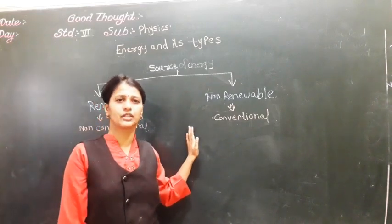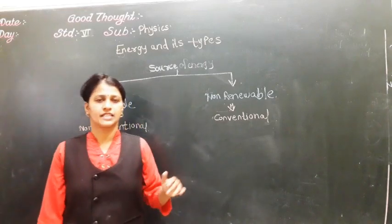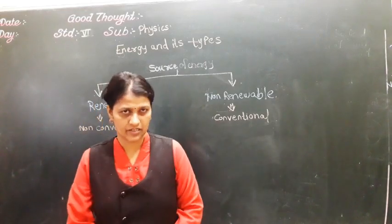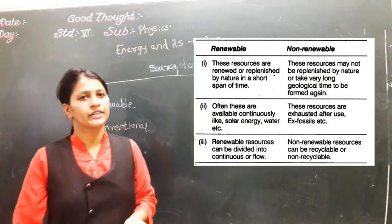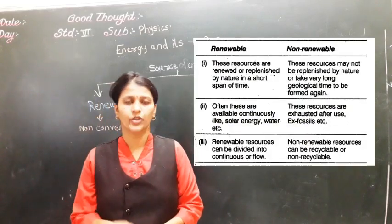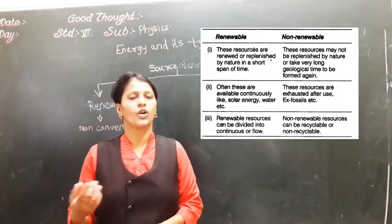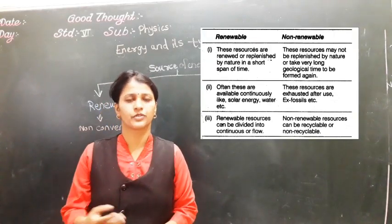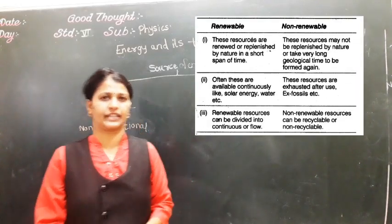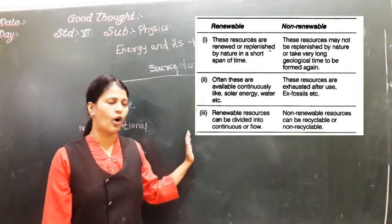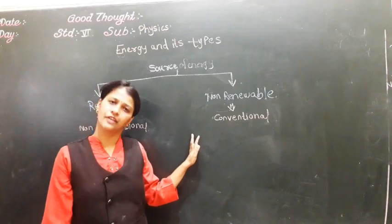So you have to use non-renewable sources very properly. For example, for a small distance if you want to go, you can use your bicycle or go by walking — there is no need to always use a vehicle. We can conserve them and take good care of non-renewable sources of energy.